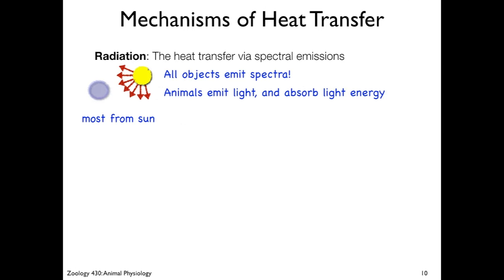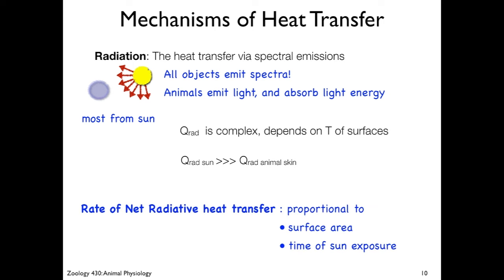Everything out there emits spectra, but of course, the sun emits way more than any animal possibly can. It's just way hotter. So what we're going to be trying to estimate is the net radiative heat transfer. It's going to be mainly from the sun and it's going to be proportional to the surface area that's exposed and how much time the sun is going to be out at the hottest time of the day. Of course, you're not going to get any at night.